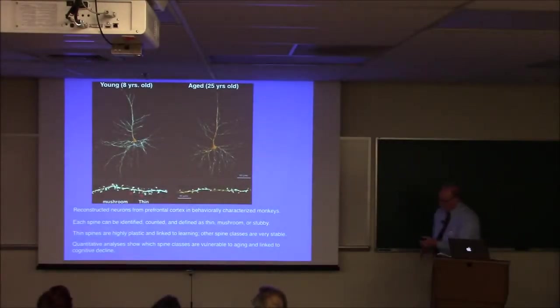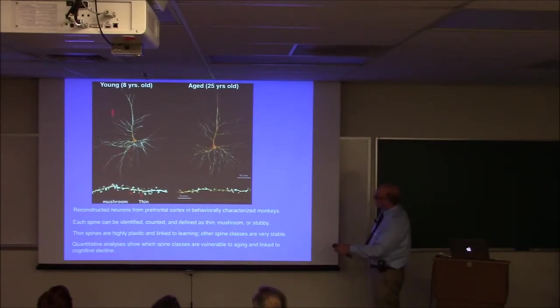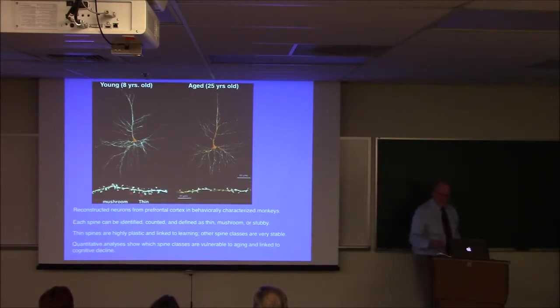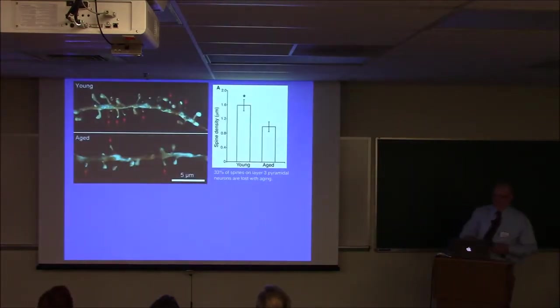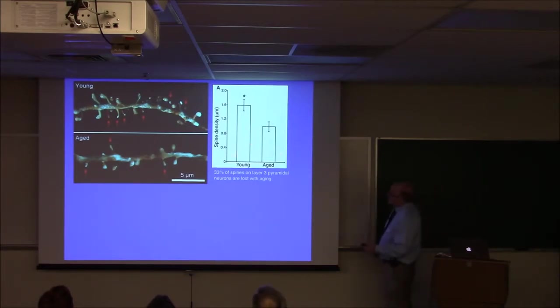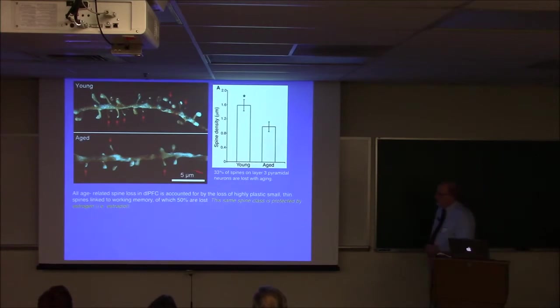Okay, so here's these are reconstructive neurons. From a young, prefrontal cortex of a young monkey. Prefrontal cortex of an aged monkey. And these spines can be divided into two, three types. But let's talk about mushroom spines, these big mushroom spines. And what we call thin spines. We can reconstruct these neurons from behaviorally characterized monkeys. So then we can relate the synaptic characteristics back to what correlates with hyperformance, what correlates with decline. Each spine can be identified and counted and categorized. The thin spines we know are highly plastic and linked to learning. Other spines are very, very stable. And so we can do these quantitative analyses and show which spines are changing, how they link to cognitive performance. This is a blowup of those young and aged neurons. Right away you can see that in the aged, the neurons from the aged animal, there's a 33% loss of spines on these neurons. That's a lot.